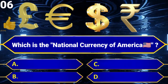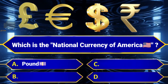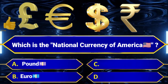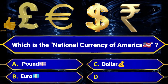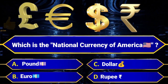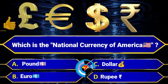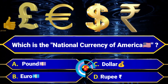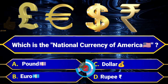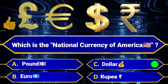Which is the national currency of America? Option A, Pound. Option B, Euro. Option C, Dollar. Option D, Rupee. Answer is Option C, Dollar.